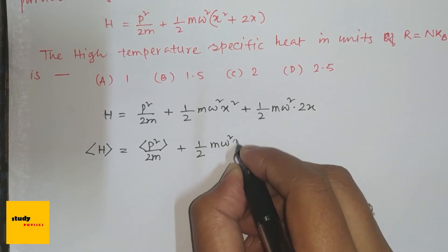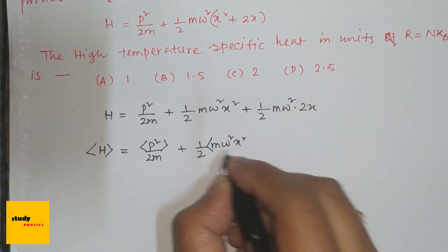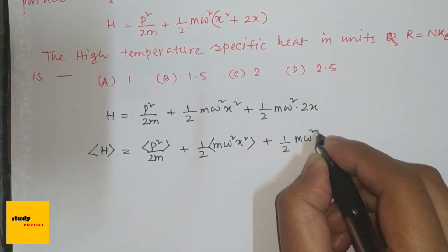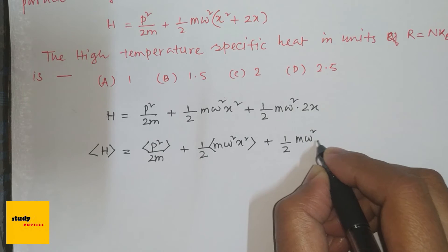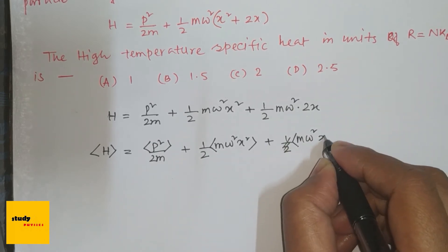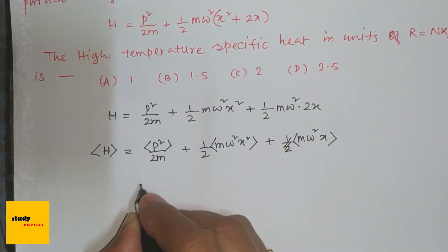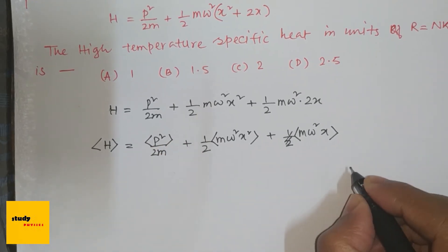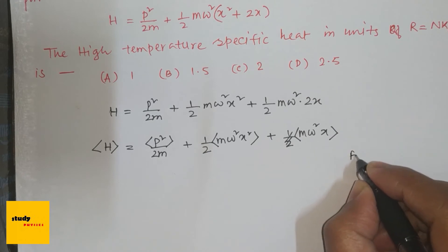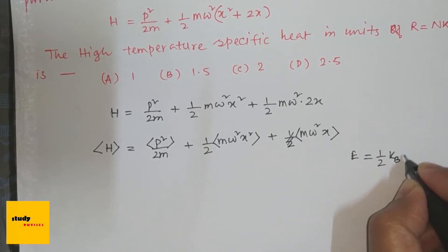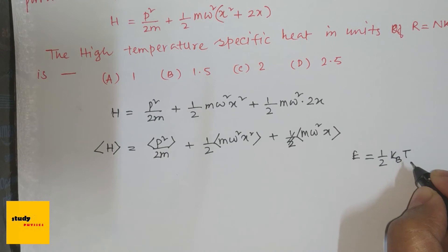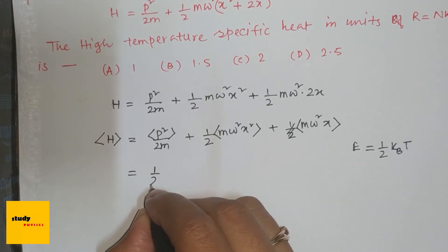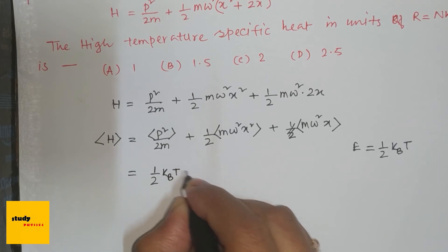So for this kinetic energy part, we know according to equipartition theorem, E equals half k_B T, where k_B is the Boltzmann constant. So for the kinetic energy part, this is half k_B T, plus for the potential energy part, this is also half k_B T.